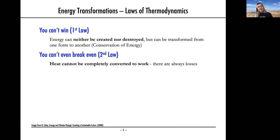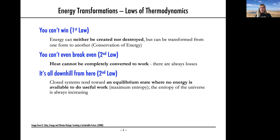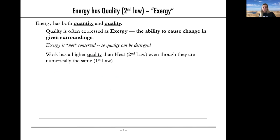The second law says: you can't even break even. Not only can you not win, there are always losses as you're converting energy from one form to another. For the second law, it's often called out that heat cannot be completely converted to work — there are always losses, and often high losses. The other part of the second law is that entropy — the disorder in the universe — is always increasing. A closed system will always tend toward a maximum entropy state where none of the energy is useful.